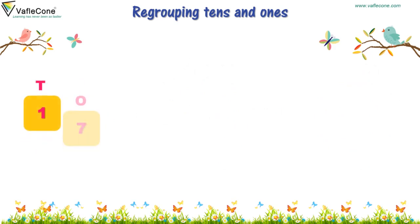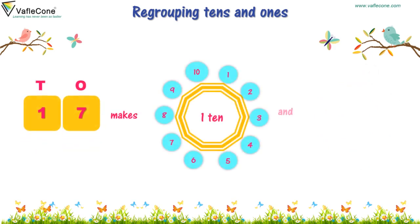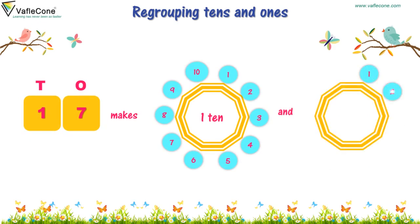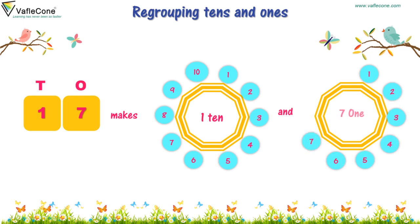One, seven — seventeen makes one ten and one, two, three, four, five, six, seven. Seven, one.